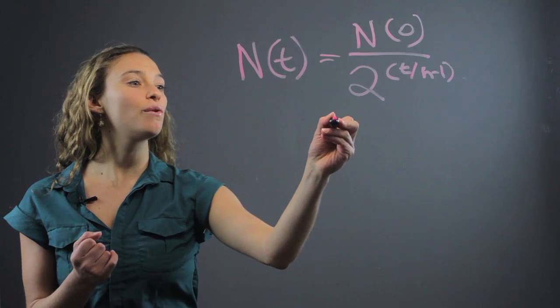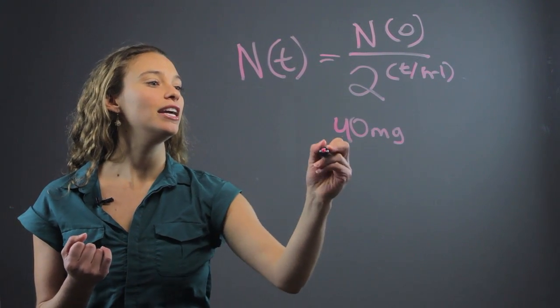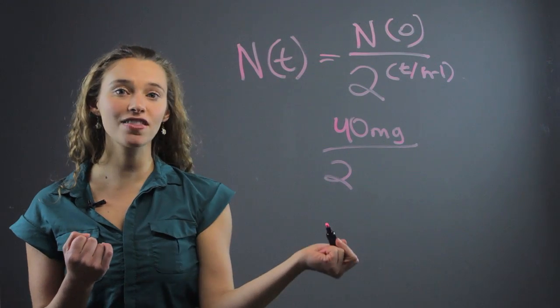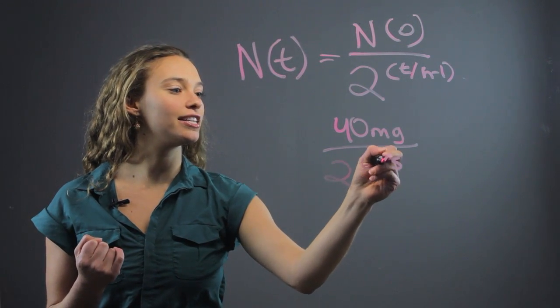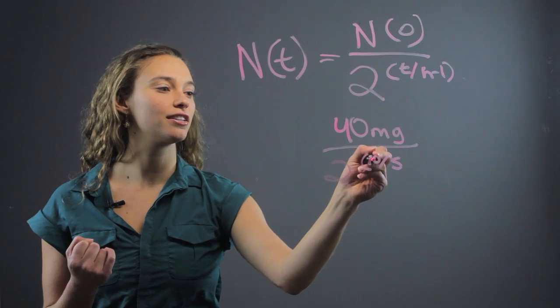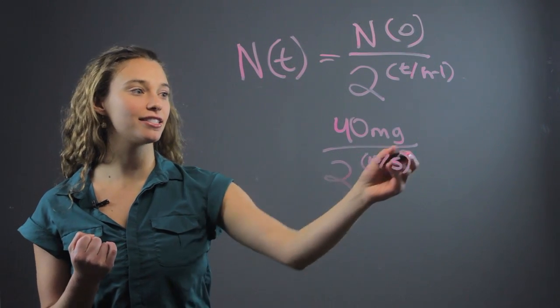Let's say that we start with 40 milligrams of a substance, and we know that the half-life of the substance is 5, and it took 10 years to decay at this rate. So we plug in the numbers like this.